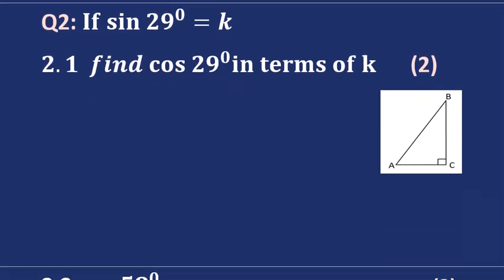Moving on to question 2. We're given sine 29 degrees equals k, and we know sine is opposite over hypotenuse. We can use a right-angled triangle: if 29 degrees is our angle, then the opposite side is y, the hypotenuse is r, and the adjacent side is x. Putting k over 1, we have sine equals y over r, so y equals k and r equals 1. We need to find x.